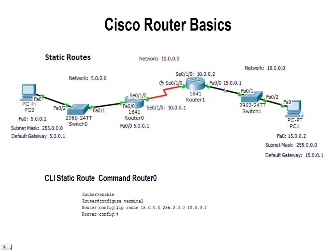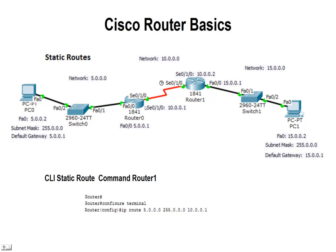We need to do the same thing on router 1, going back to network 5.0.0.0. We need to tell it to send any traffic bound for that network to the port on the first router. For configuring router 1, we put in the command IP route 5.0.0.0 255.0.0.0 10.0.0.1. Any traffic from PC1 destined for network 5.0.0.0 will go to port 10.0.0.1, and that router — since it's connected to it — will know where to forward the traffic.